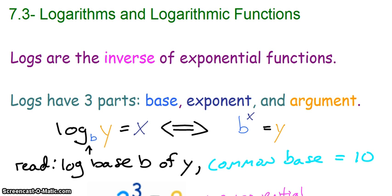Because this goes back and forth with exponentials, these do parallel each other. So in the log form, I've got log base b of y equals x. If I was going to write that as an exponential, I have a base of b for my exponent, I have an exponent of x, and then my answer is my argument.